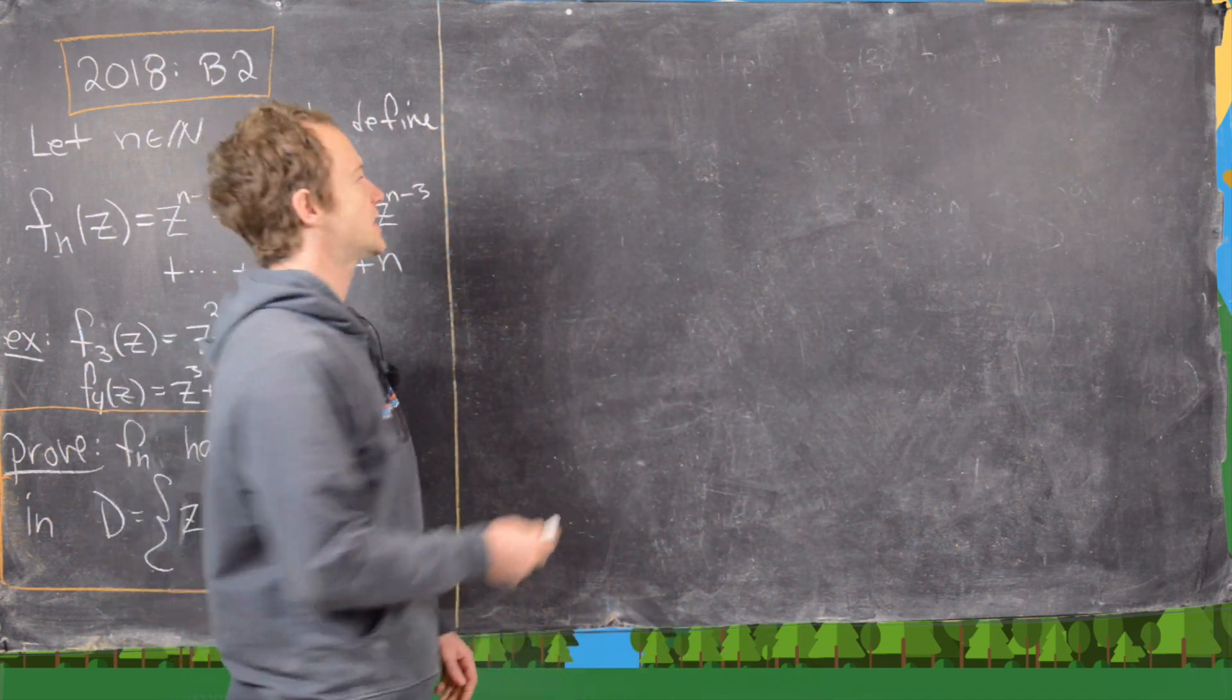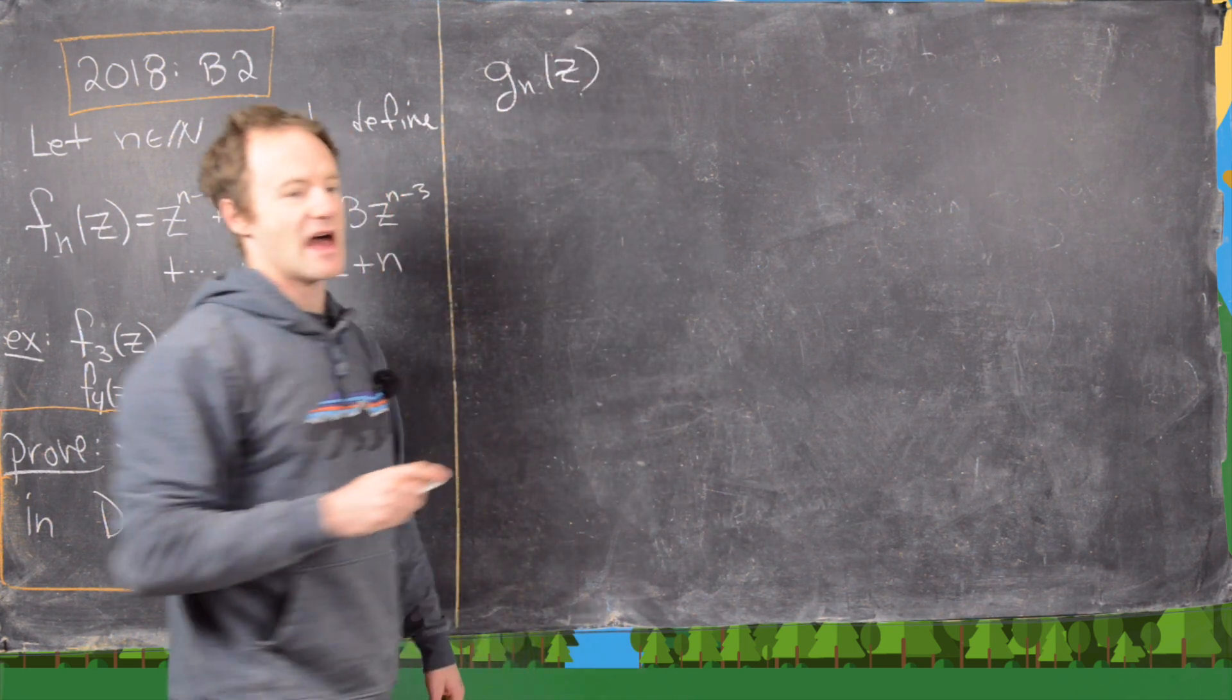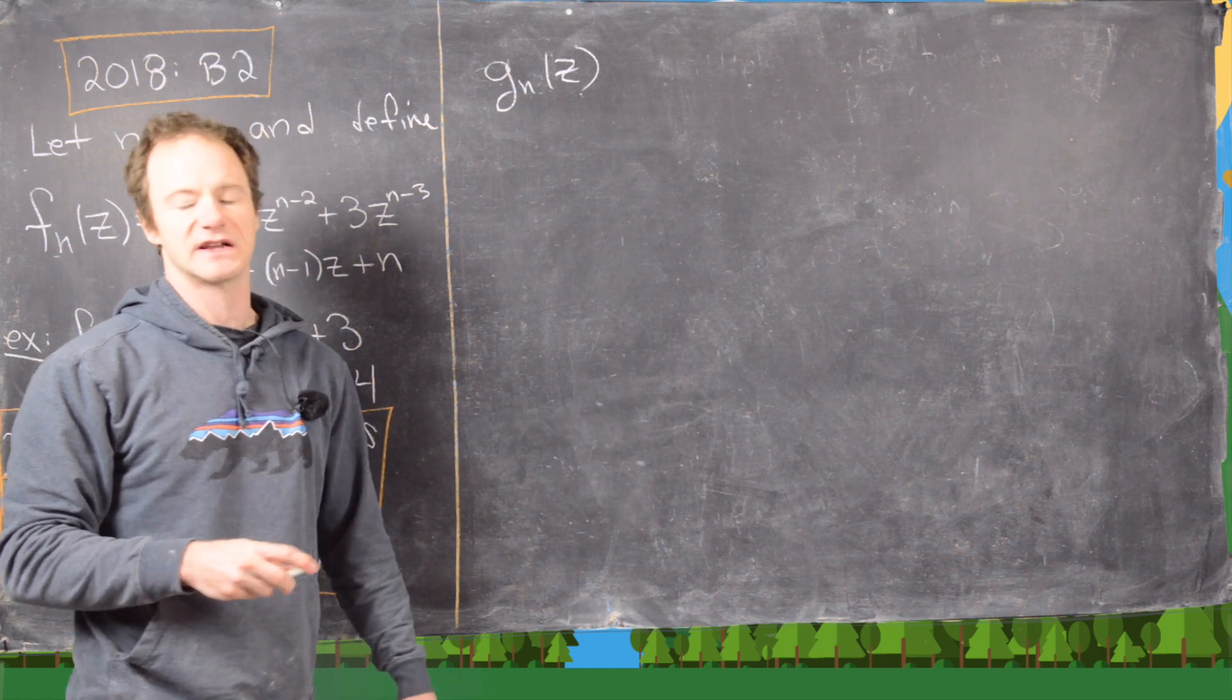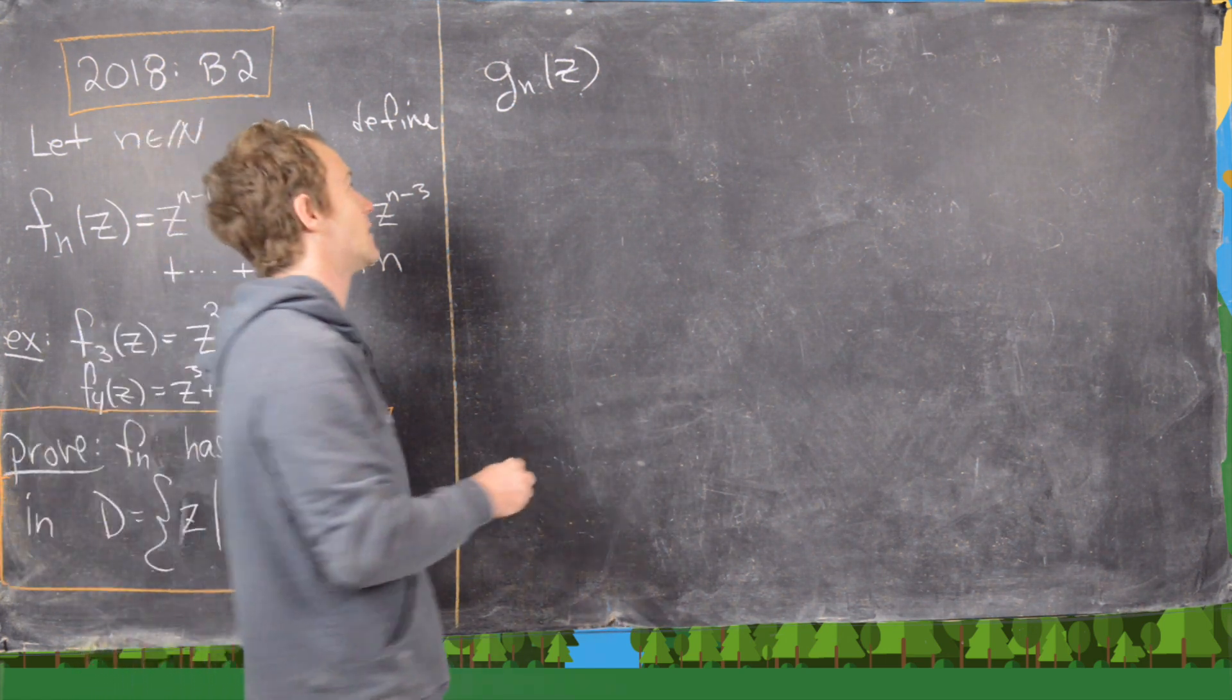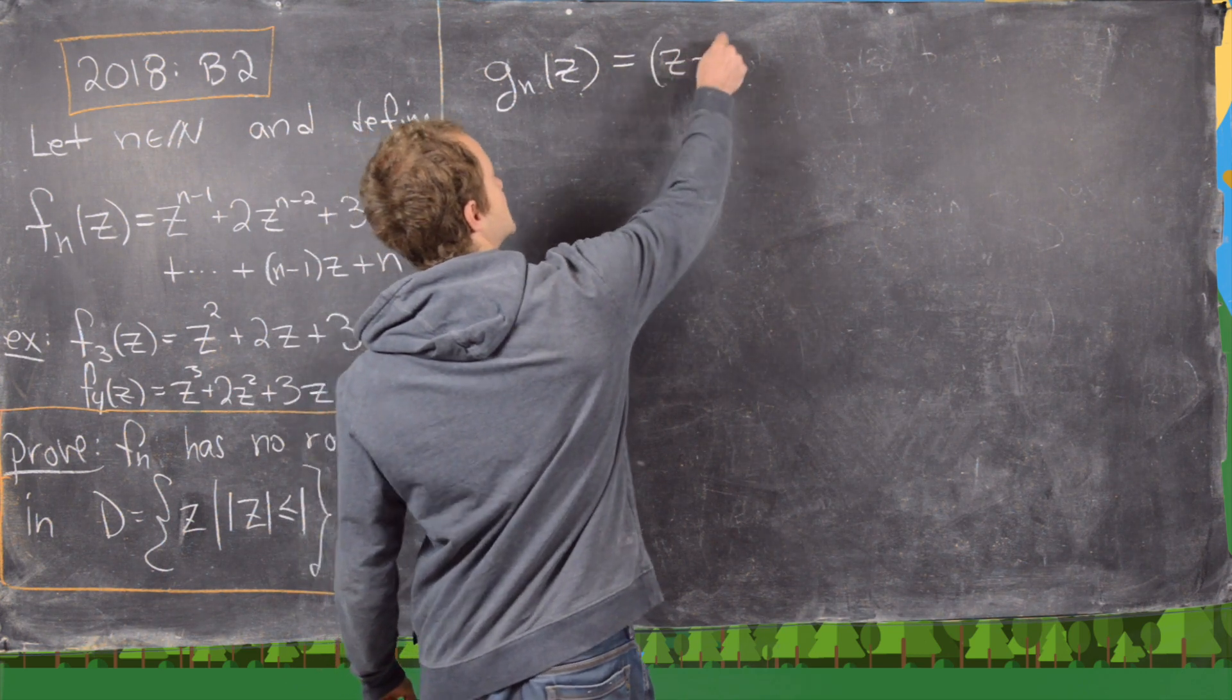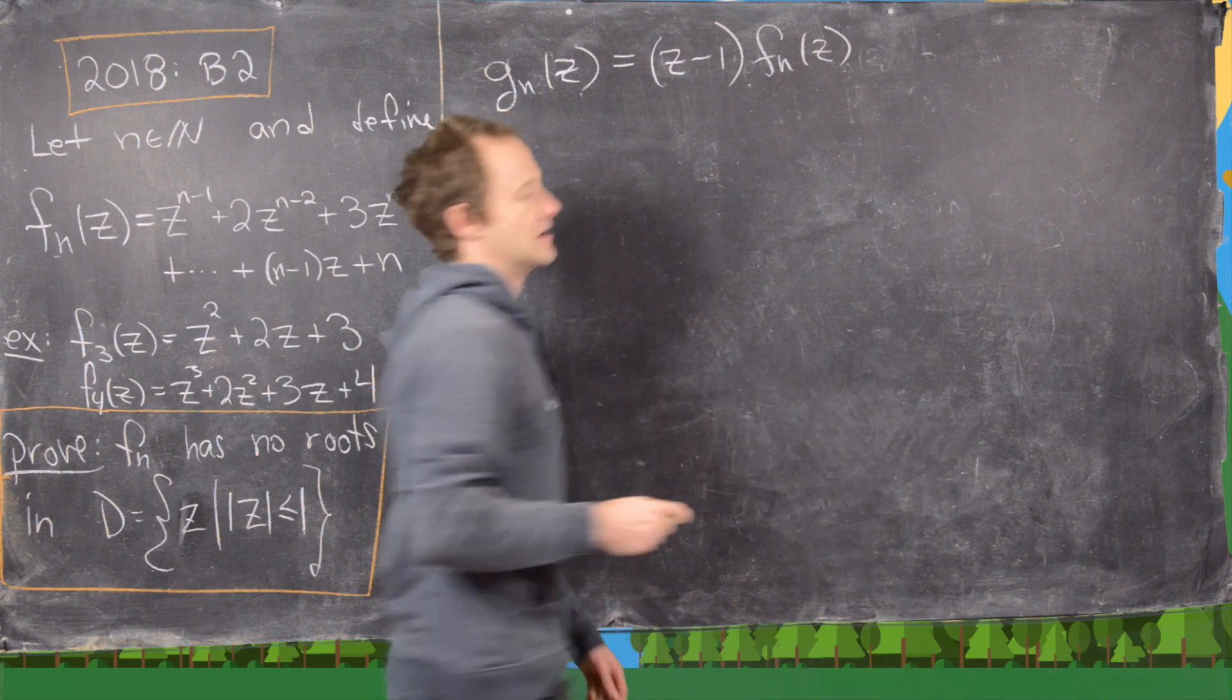Now we're ready to look at the solution. As I noticed before, we're going to multiply fn(z) by some polynomial that has a simplifying effect, and we're going to call this new polynomial gn(z). So we're going to take this to be z minus 1 times fn(z).